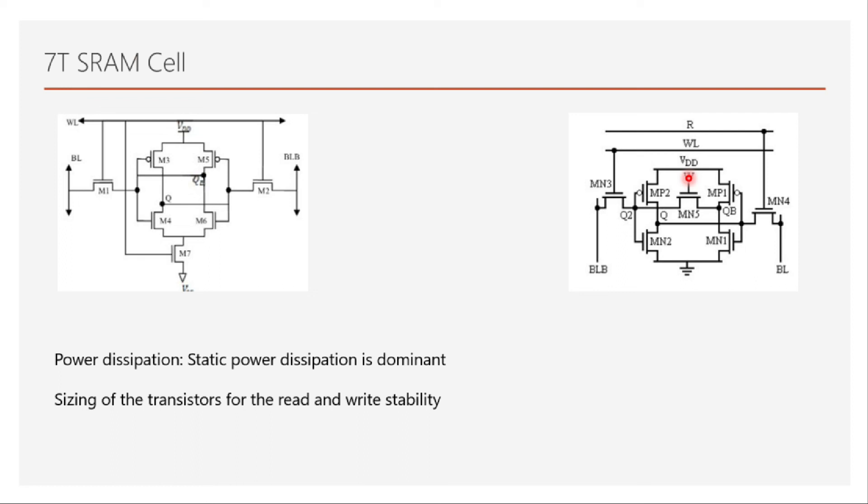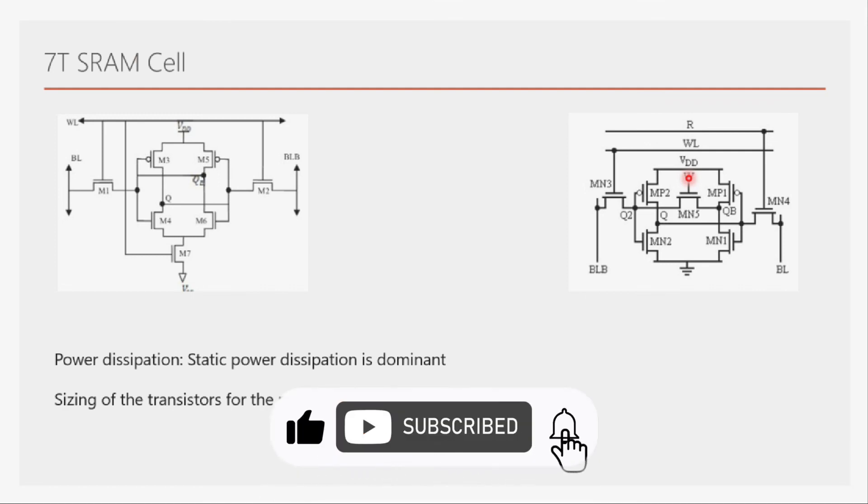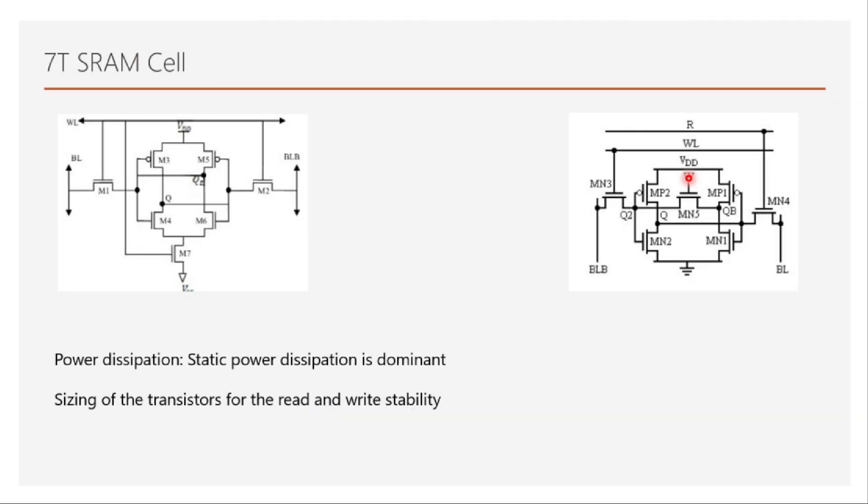We will discuss 8T and other transistors in upcoming videos and why they are used predominantly over these kind of cells. You will understand that. This is about 7T SRAM cell. Thanks a lot for watching and I'll see you in the next video. Bye-bye.